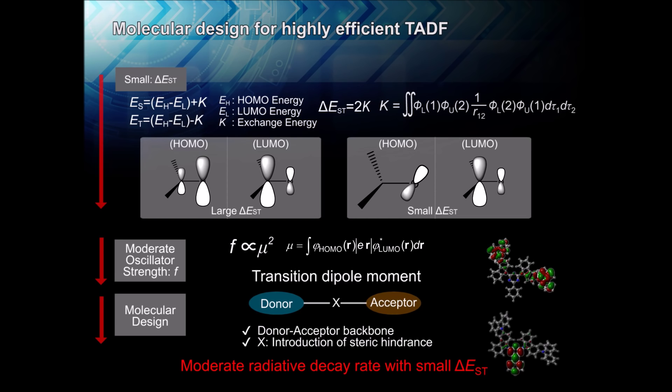To realize efficient TADF, researchers at OPERA finally balanced this tradeoff through the clever design of new chemical structures that combine electron-donating units and electron-accepting units with a twist between them to partially break their electronic connection, thereby effectively, but not completely, separating the HOMO and LUMO.